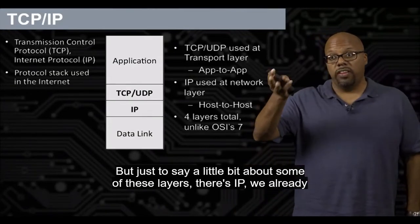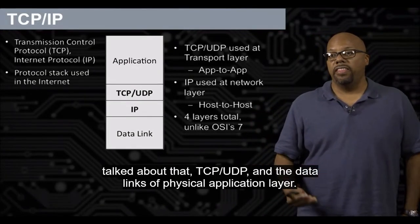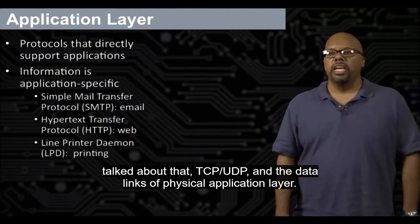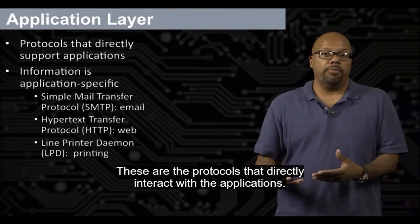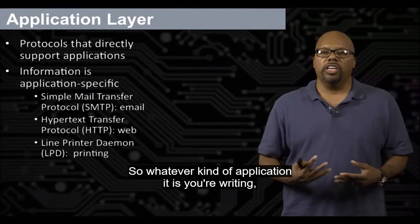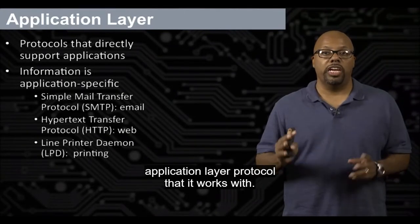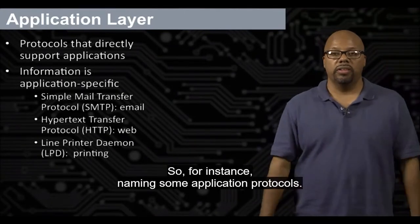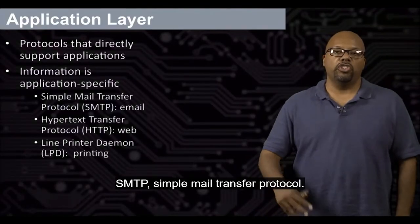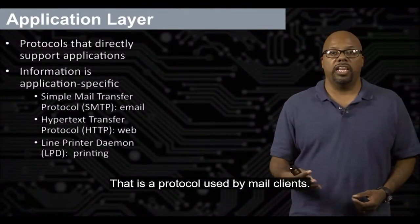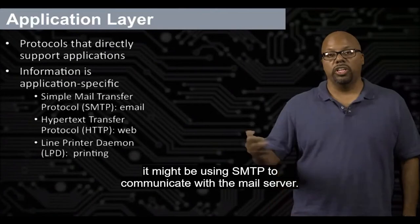Let me say a little bit about some of these layers. There's IP, TCP, UDP, and the data link and physical layers. Application layer protocols are the ones that directly interact with the applications. Whatever kind of network application you're writing, it will have some kind of application layer protocol that it works with. For instance, SMTP — Simple Mail Transfer Protocol — is used by mail clients to communicate with the mail server.